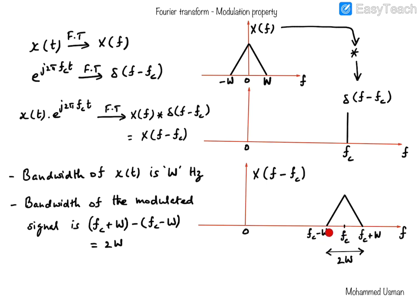We also notice that the bandwidth — the range of positive frequencies present in the signal — is doubled in this case, because the highest positive frequency is F_c + W and the smallest positive frequency is F_c − W. So the bandwidth is 2W for the modulated signal. Modulation has produced frequency translation: the baseband signal centered on zero frequency has translated or shifted in frequency by an amount F_c, the carrier frequency. We have utilized two properties of the Fourier transform and a property of the convolution operation.